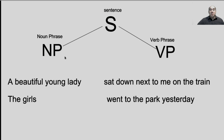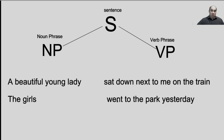We generally have a noun phrase and a verb phrase. Here's an example: "A beautiful young lady sat down next to me on the train." So "a beautiful young lady" is your noun phrase — you've got a couple of adjectives and a noun. Your verb phrase is "sat down next to me on the train." Similarly, "the girls" is your noun phrase and "went to the park yesterday" is your verb phrase — it's the verb and all the parts that go with it.